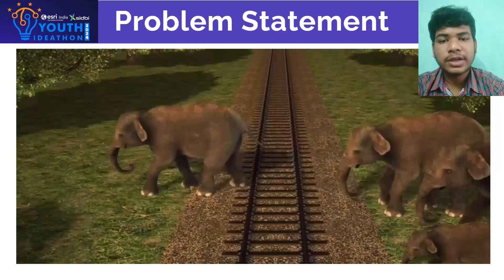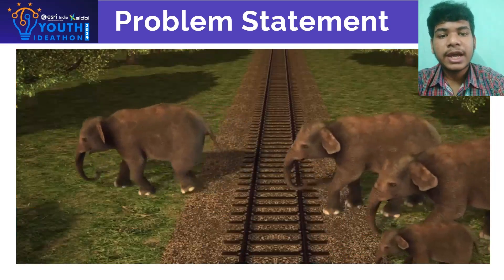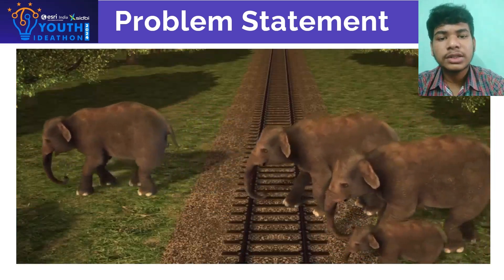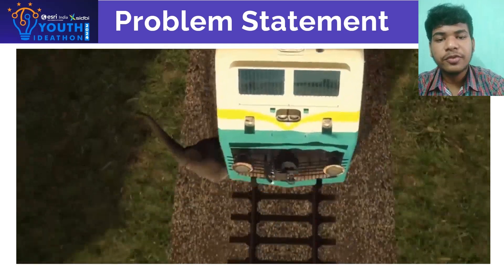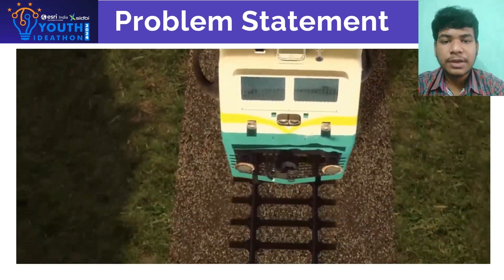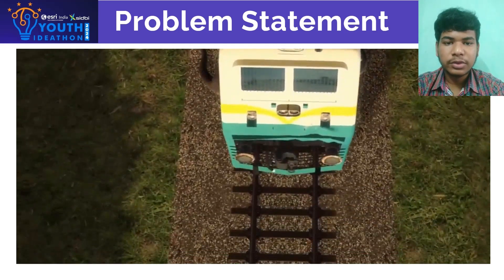In a tragic moment, the train crashed into the herd. Elephants were thrown and the young ones trampled, turning the peaceful forest into chaos. Blood covered the ground and the elephants' cries mixed with the train's noise.